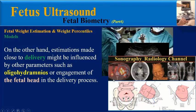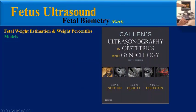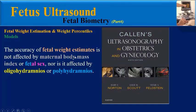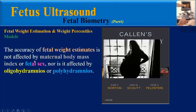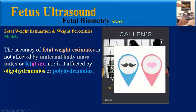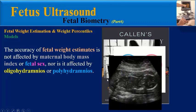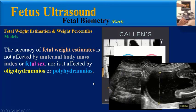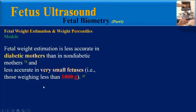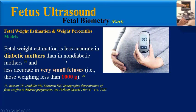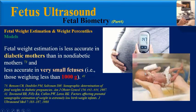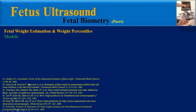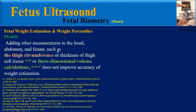In contrast, some references believe that the accuracy of fetal weight estimates is not affected by maternal body mass index, fetal sex, oligohydramnios, or polyhydramnios. Fetal weight estimation is less accurate in diabetic mothers than in non-diabetic mothers, and less accurate in very small fetuses weighing less than 1000 grams.